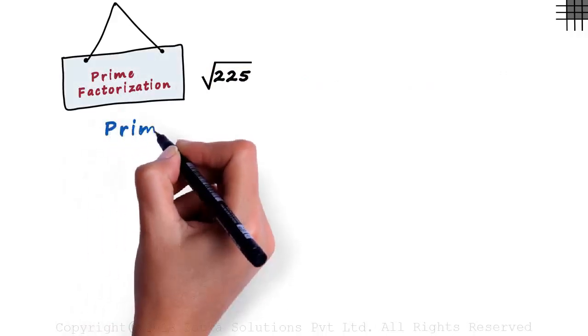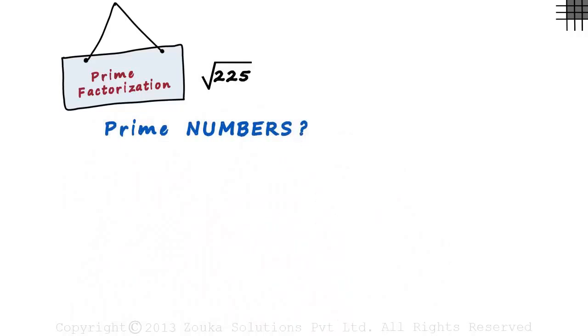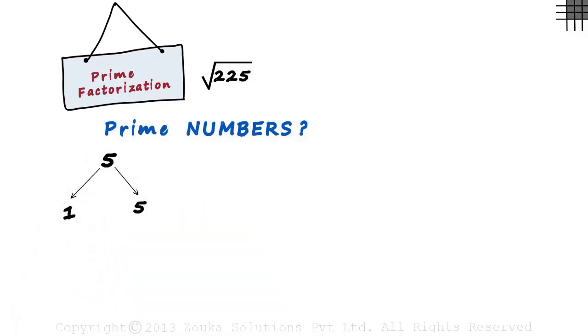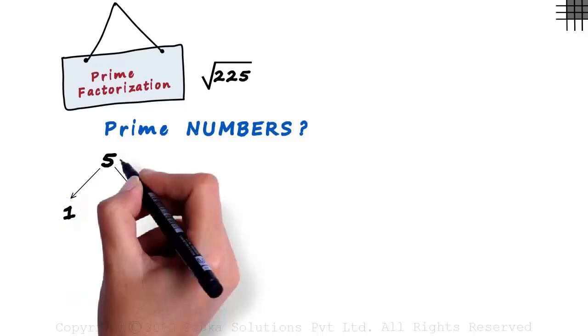let us revise what prime numbers are. A prime number is a number which is divisible only by itself and 1. Say 5. 5 is divisible by 1 and it's divisible by 5. There is no other number which can divide 5. 1 and itself. Hence, it's a prime number.